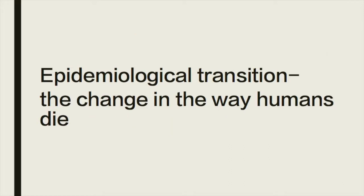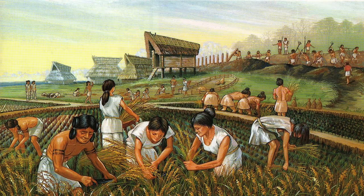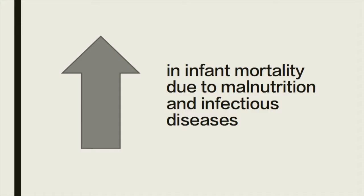The change in the way humans die is called an epidemiological transition. The first epidemiological transition occurred around 10,000 years ago, with the advent of agriculture, the domestication of animals, and a more sedentary lifestyle. This change was marked by an increase in infant mortality due to malnutrition and infectious diseases.